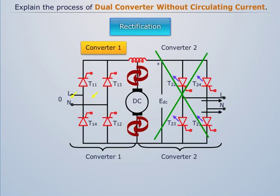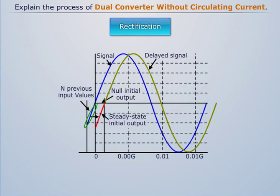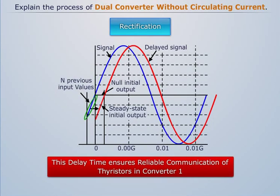And similarly in rectification mode, converter 1 will supply the load current, while pulses to second converter are blocked. And the pulses to converter 2 are applied after a delay time of 10 to 20 ms. This delay time ensures reliable communication of thyristors in converter 1.